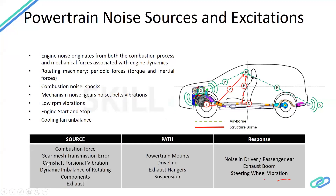The sources of powertrain NVH include combustion of the gear mesh, transmission error, camshaft traction vibrations, dynamic imbalance, and exhaust. The paths would be the powertrain mounts, drivelines, hangers, and suspension. The response would be noise experienced by the driver or passenger, exhaust boom, driving feel, or steering wheel vibration.